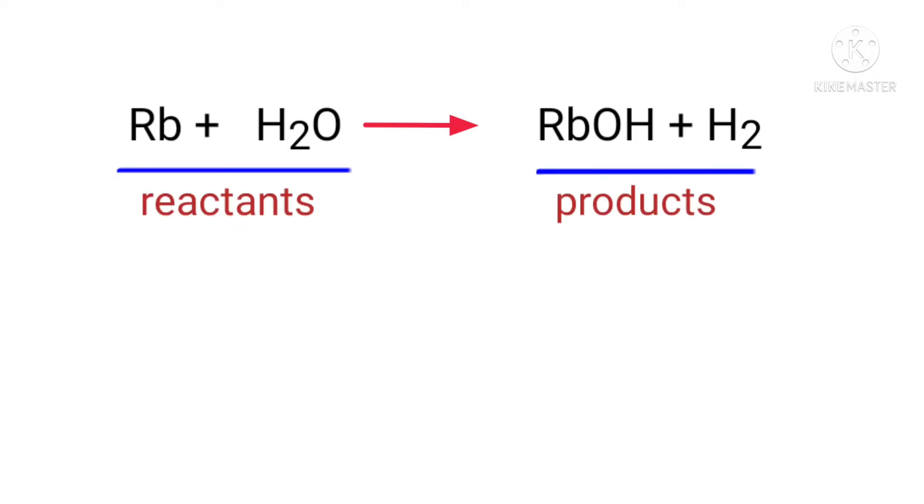In this equation, the reactants are rubidium and water, and the products are rubidium hydroxide and hydrogen. If you look at this equation, the equation is not balanced.